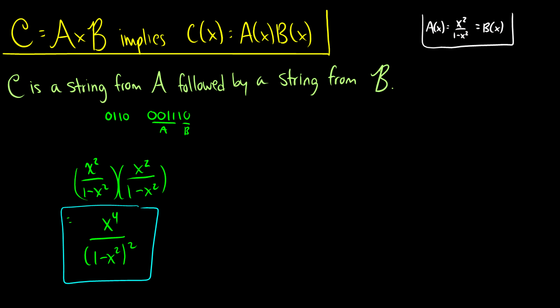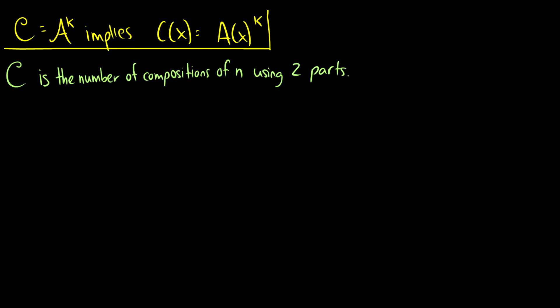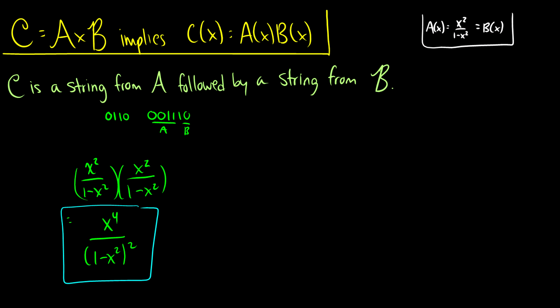So that's A cross B. Now what happens when we want to take more than A cross B? Say we want A cross A cross A cross A cross A cross A. A to the K is just equal to A times A times A all the way, K times — a really giant cross product. So we just multiply A(x) times A(x) times A(x), K times. This is really just the previous slide with more reiterations of multiplication.